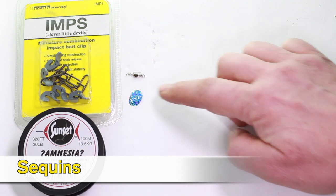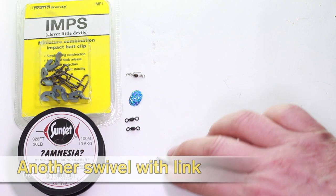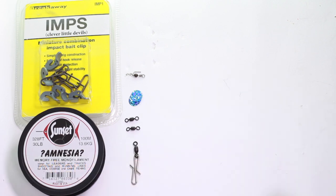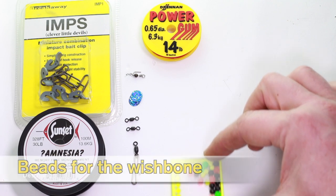You can use some sequins, a small 180 pound swivel - a couple of those - and another swivel with a link for your main line. We're going to use power gum to good effect on this rig.